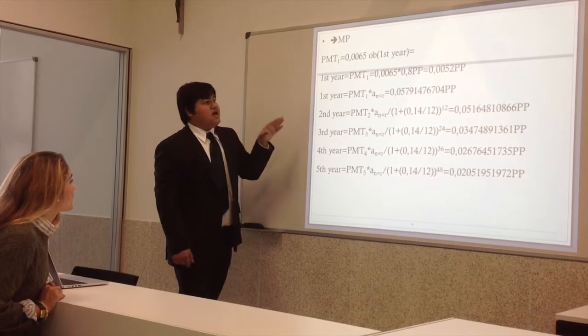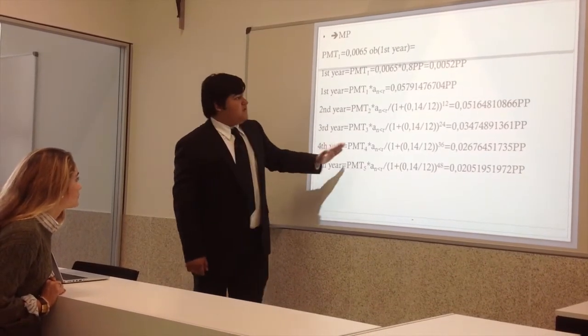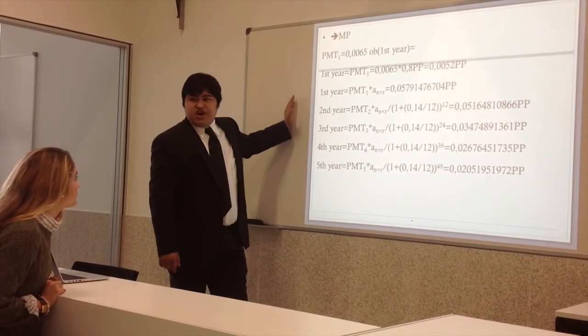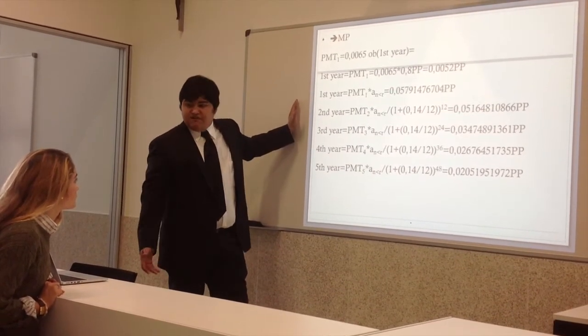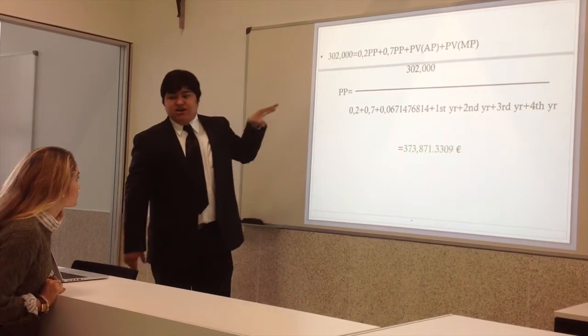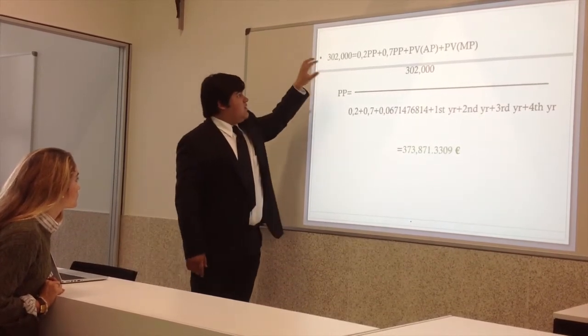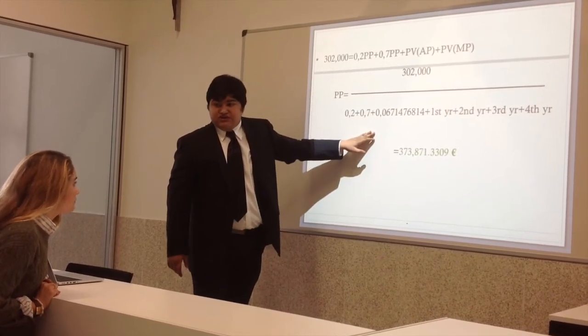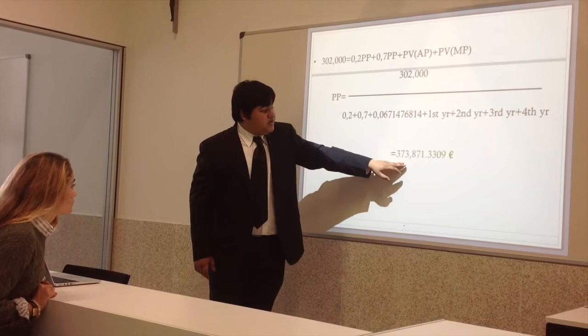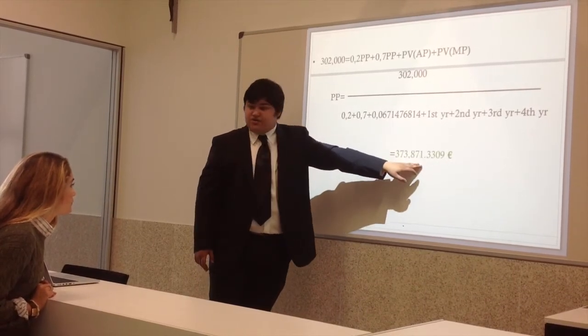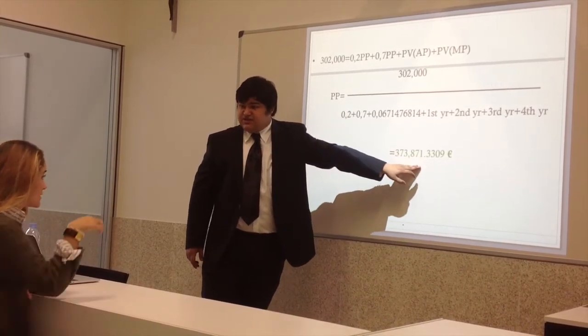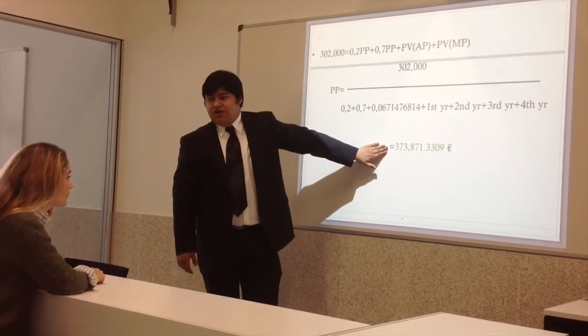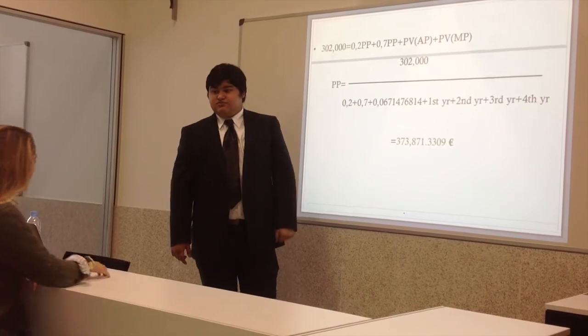Perfect. Once we have the five years, we have to take each year to the present, because we cannot forget about the time value of money. Once we have them all in the present, we calculate, with the present value, her new purchase price, which will end up being 373,871 euros and 22 cents. Okay, so that's the price she will end up paying? She will pay totally, this will be her price. Okay. Thank you. You're welcome.